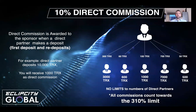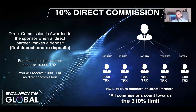The 10% direct commission is awarded to the sponsor when a direct partner makes a deposit — this applies to the first deposit and any future redeposits. For example, if your direct partner deposits 10,000 Tron, you will receive 1,000 Tron as your direct commission. There's no limit to how many direct partners you can have. This is a unilevel system built on width. Remember that all commissions count towards the 310% limit.